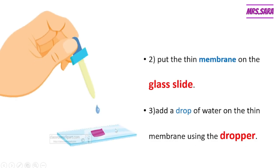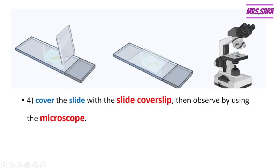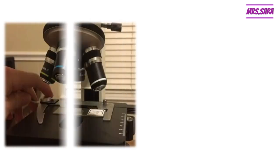After we put the drop of water on the thin membrane, we cover it with the cover slip. This is the prepared slide. The fourth step is to cover the slide with the cover slip, then observe using the microscope.